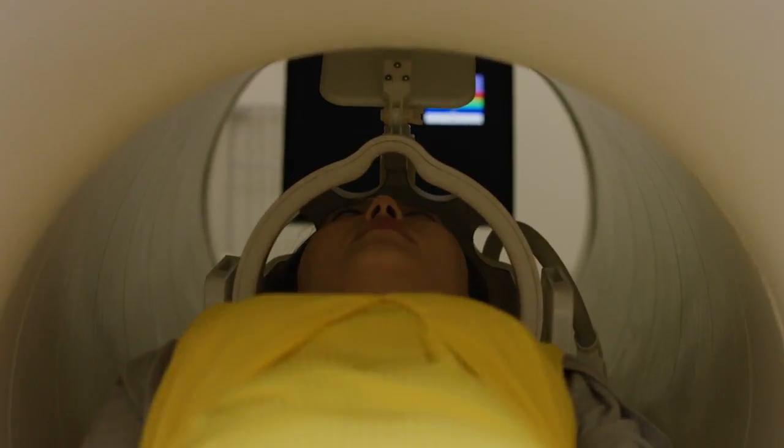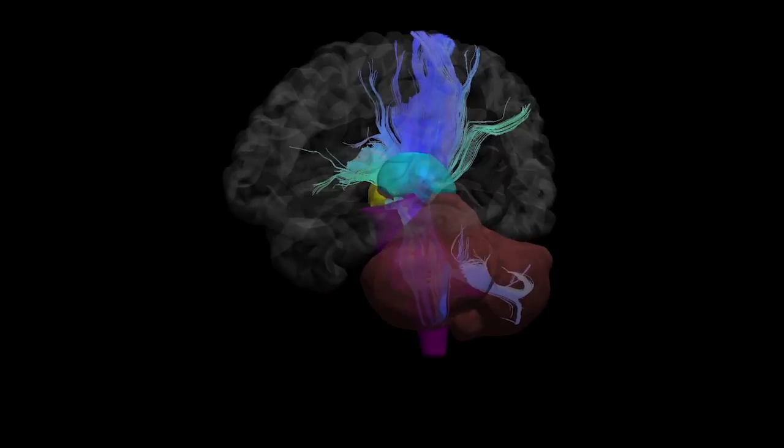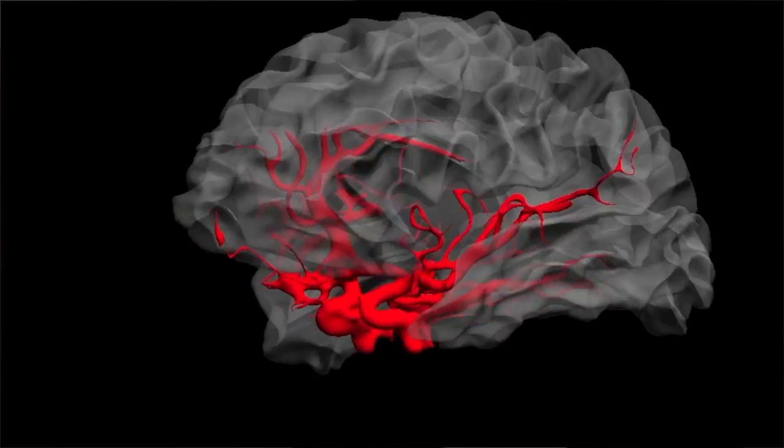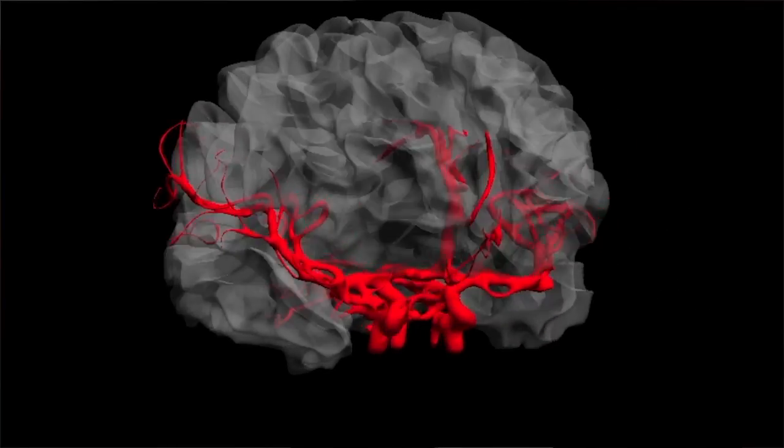We developed a piece of software called BrainSuite, which allows you to take magnetic resonance images of the brain and automatically extract representations of the different brain structures. One of the applications we currently work on is epilepsy — in particular, we're interested in finding small abnormalities in the brain that can't be seen by visual inspection of an MRI image. We've developed computational techniques that analyze the cerebral cortex, the outer layer of the brain, and can automatically detect these abnormalities.